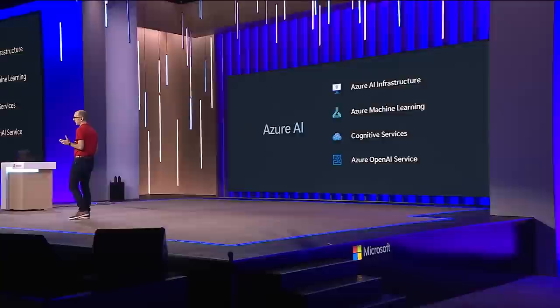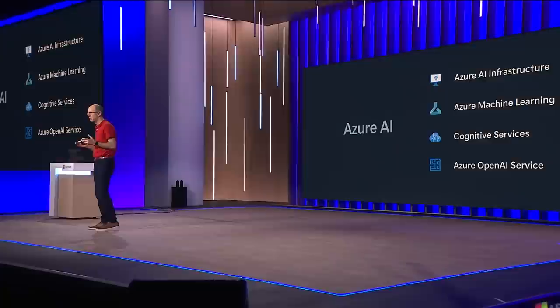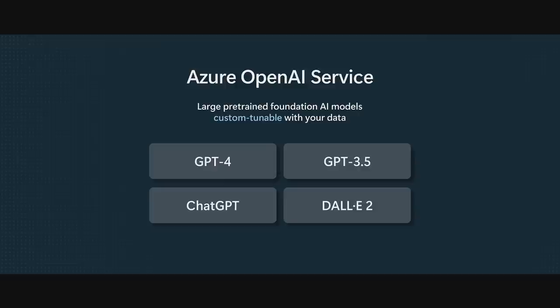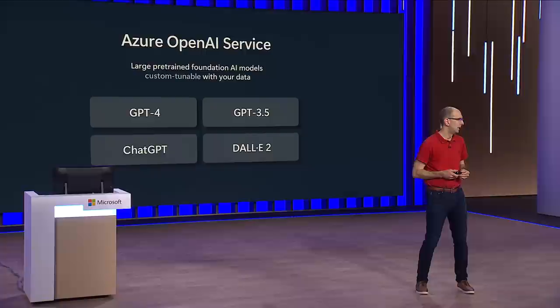Azure AI includes several categories of capabilities including advanced AI, Azure AI infrastructure, and Azure OpenAI Service — our newest capability, which became generally available in January of this year. The Azure OpenAI Service enables developers and organizations to access and use the most advanced AI models in the world, including both ChatGPT and GPT-4. All of the Microsoft Copilot experiences you're seeing at Build are built using these Azure OpenAI models — and you can use the exact same APIs to build and scale your own AI solutions.